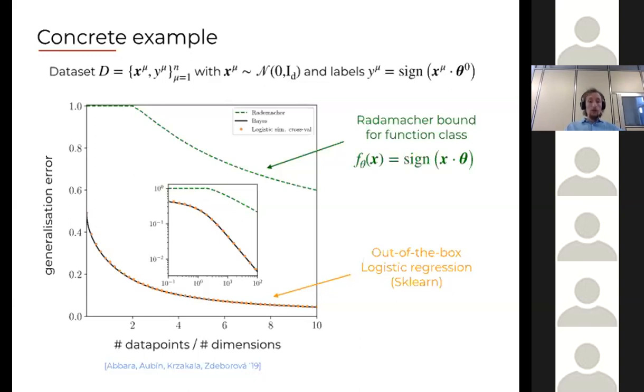If you look at the orange dots, they are just a solver out of the box logistic regression from scikit-learn. The dashed green is predicted by the worst case VC type bound for this problem, which you can actually compute. You can see there is a big gap between both of them. In black you can see the Bayes optimal prediction which comes from the theory that uses a prior from the model of the data. The typical case using scikit-learn is much closer to the Bayes optimal than to the worst case analysis. Taking into account the structure of data actually matters for this problem.